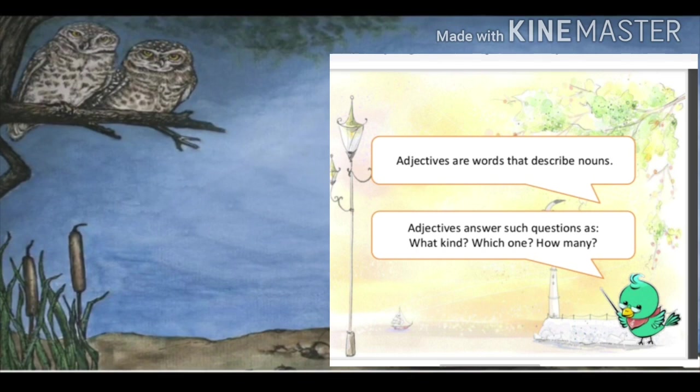For example, if we see a sentence and ask the question 'what kind' to the noun, we will get an answer — that is also an adjective. And if we ask 'which one' to the sentence, we will also get an answer which is an adjective. And 'how many' — that answer is also an adjective.